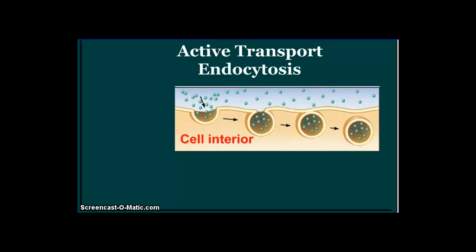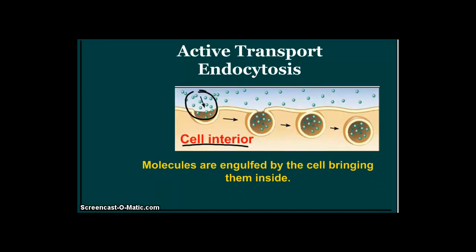Endocytosis is the opposite. The way I remember this is 'endo' — endocytosis is moving endo the cell, or into the cell. Exocytosis is out of the cell. Again, we have the cell interior. In this case, the molecules right here are engulfed by the cell and brought into the inside of the cell, forming a vesicle. Both of these are active transport because it requires the cell to use energy to engulf the molecules or to push the molecules outside of itself. Moving that vesicle around and fusing it with the cell membrane requires energy.